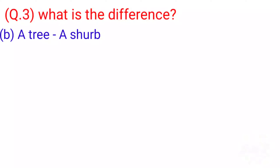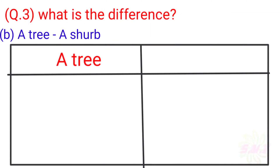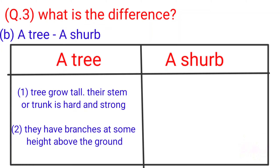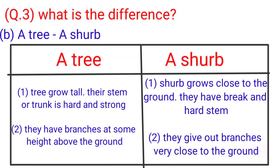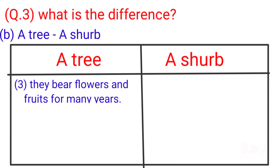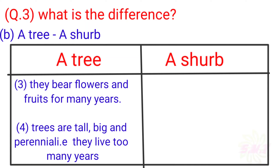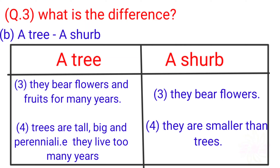B: A Tree vs. Shrubs. A Tree: 1. Trees grow tall; their stem or trunk is hard and strong. 2. They have branches at some height above the ground. Shrubs: 1. Shrubs grow close to the ground and have thick, hard stems. 2. They give out branches very close to the ground. 3. They bear flowers and fruit for many years. 4. Trees are tall, big and perennial — they live for many years. Shrubs are smaller than trees and also bear flowers.